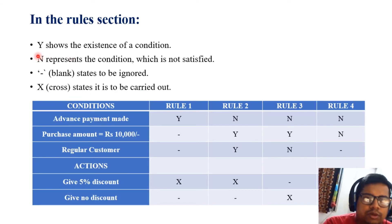Y shows the existence of a condition, N represents the condition which is not satisfied, blank states to be ignored, and X (cross) states that it has to be carried out.